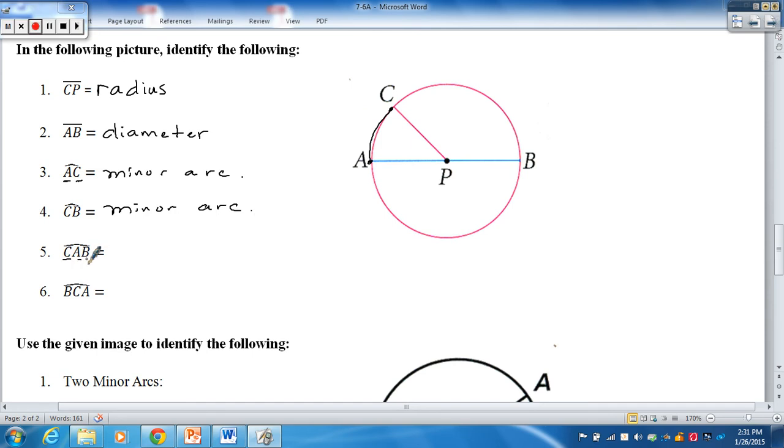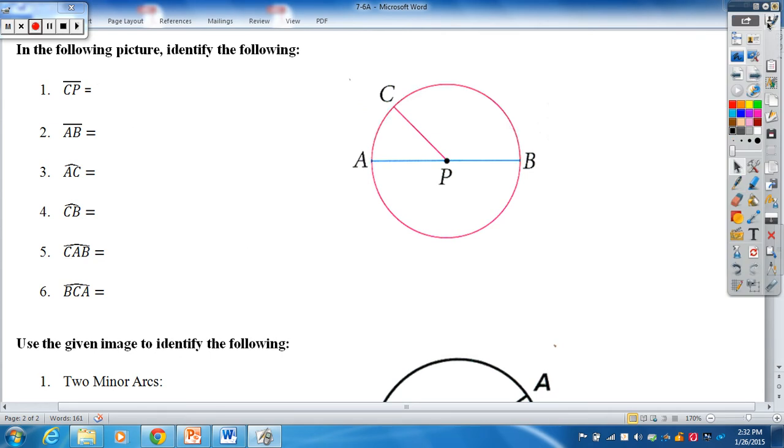CAB, now this is where it gets a little bit more confusing here. With three points, it's either going to be a semicircle or a major arc. Well, if I look here, C, A, B, obviously greater than half a circle. So this one is going to be a major arc. And then for BCA, B, C, A, that's a half circle. This one is a semicircle. So again, not very hard terminology. Hopefully that hit home as far as what I expect to see on that section there. Don't get any of those terms wrong. Those are simple terms.